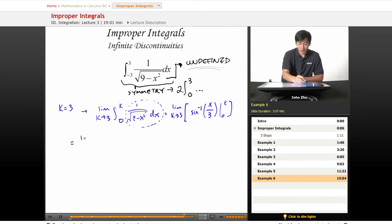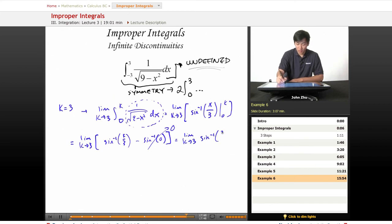So we have limit as k approaches 3, sine inverse of k over 3 minus sine inverse of 0. So the inverse sine of 0 is going to be 0, so we're left with the limit as k approaches 3, sine inverse of k over 3.